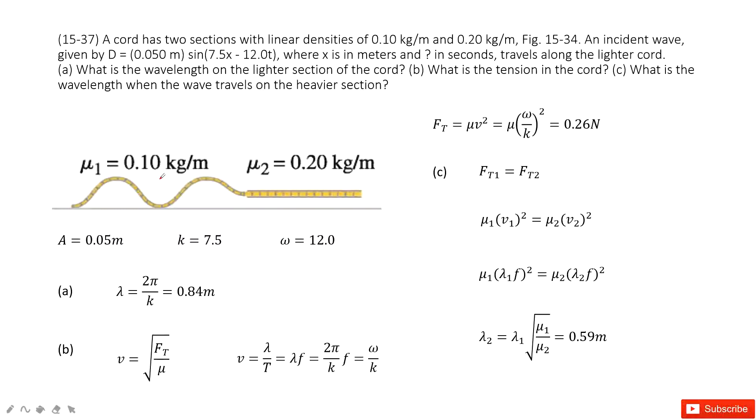And then we need to find some quantities for these waves like the wavelength, the tension along this cable, and the ratio of this wavelength. So first, let's see what quantities are given. We have mu1 and mu2, which tell us the linear densities at the two parts of this cable.